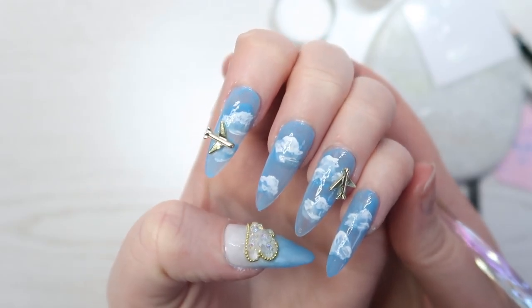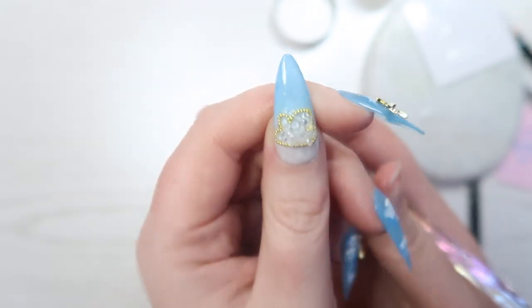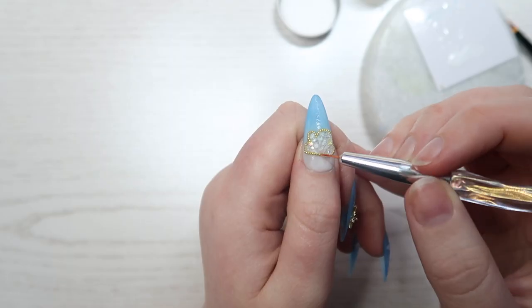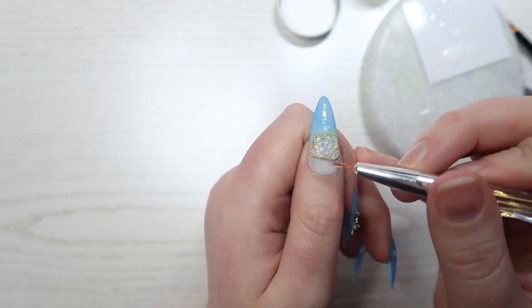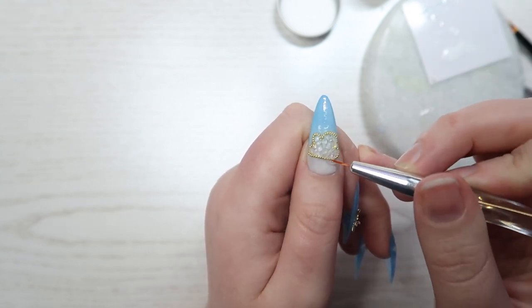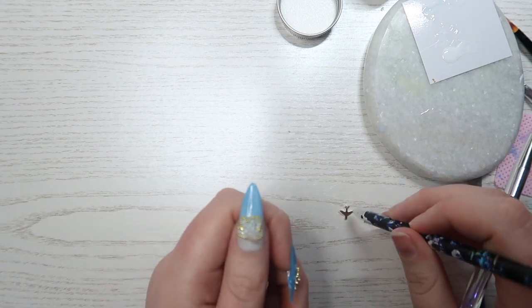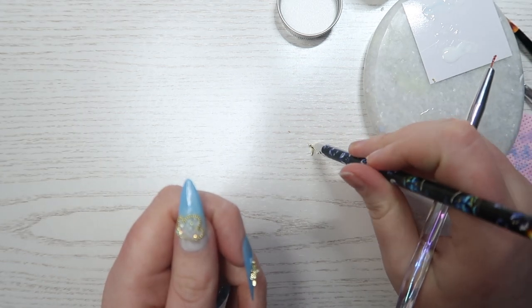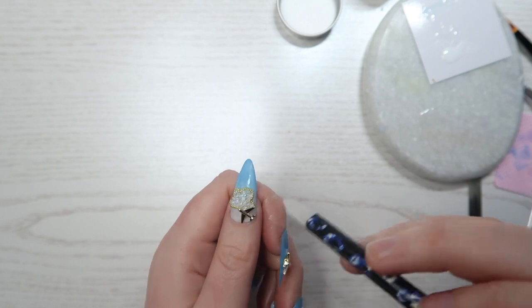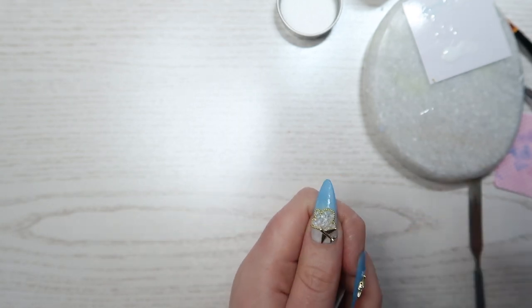This is the moment where I decide that the thumb is still looking a little bit plain and I want to add another airplane charm. So I will be using the same gel tip adhesive as before to apply the airplane charm on top of the cloud.